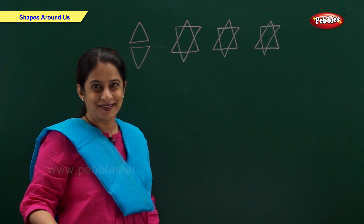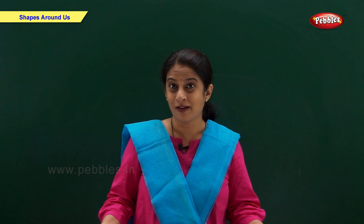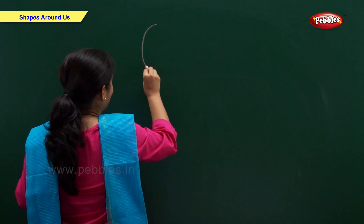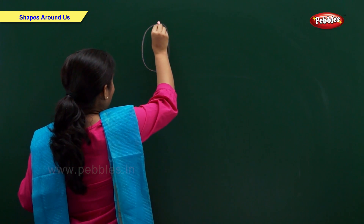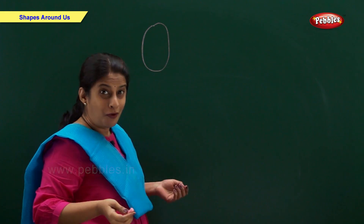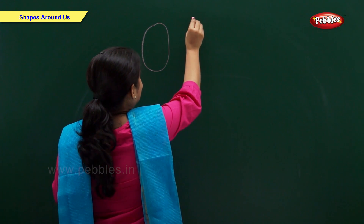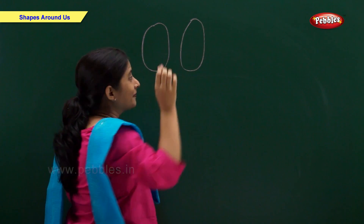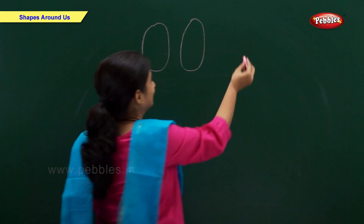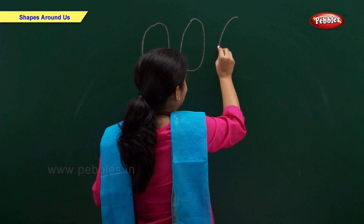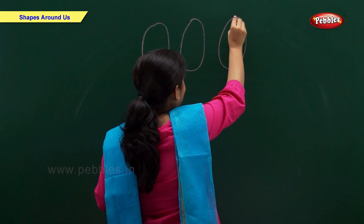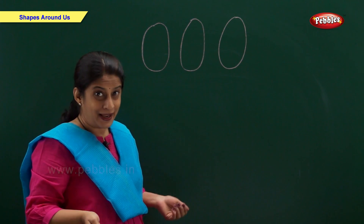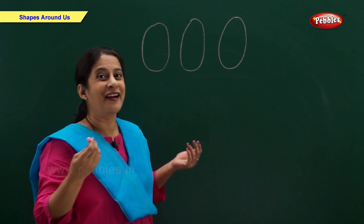Now let's draw an oval. Oval. Shape of an egg is like an oval.